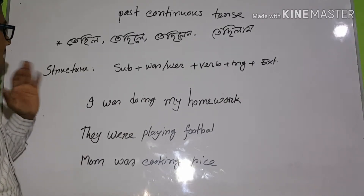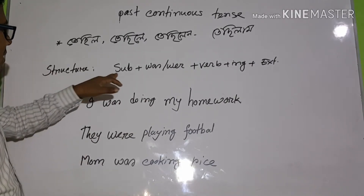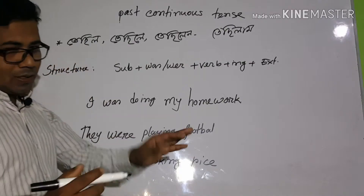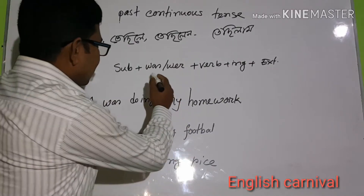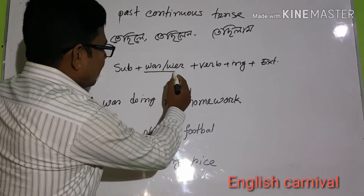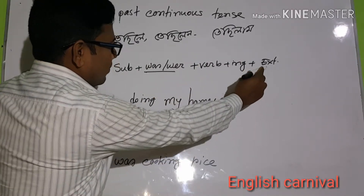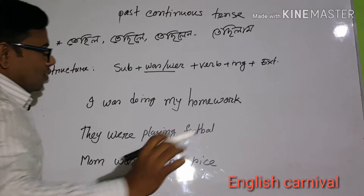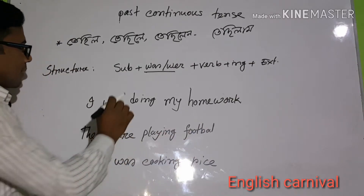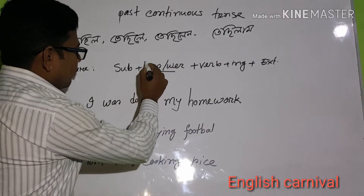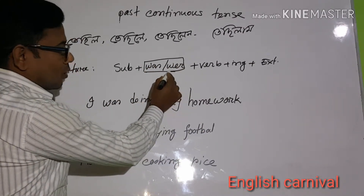English grammar is structured. The subject is very simple. For past continuous, the structure is: Subject + was/were + verb-ing + extension or object. Compare this to present continuous tense, where the structure is: Subject + am/is/are + verb-ing.